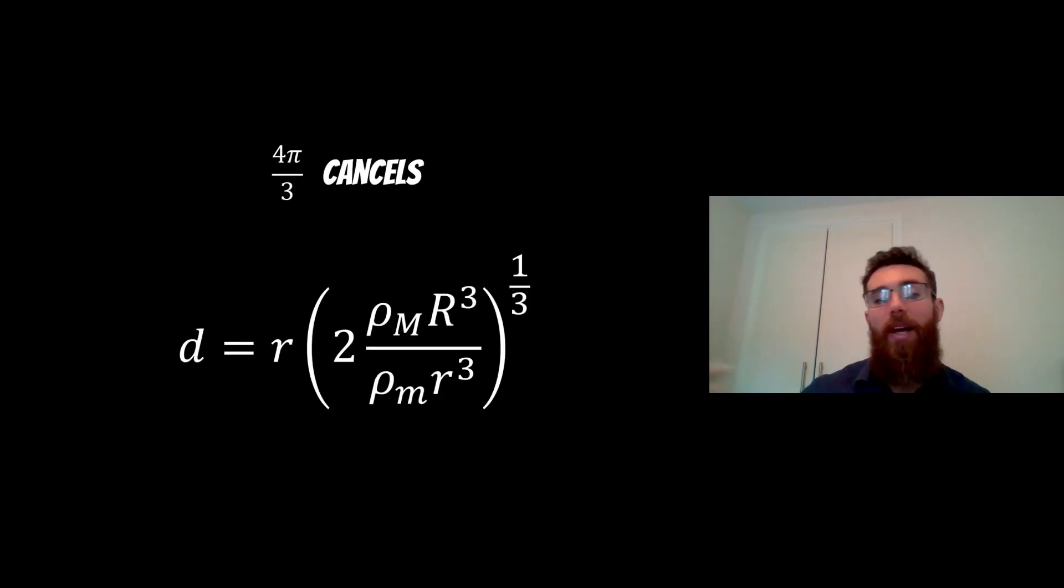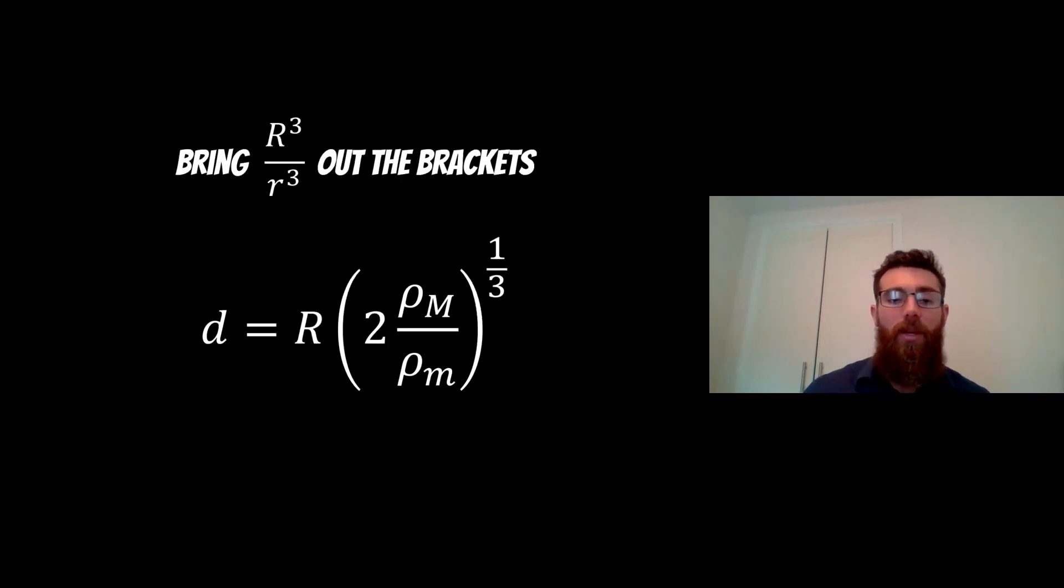We can go back to our expression we had before. Now the 4π/3 cancels out straight away because it's top and bottom, and we're just left with the density times the radius cubed of both the planet and the satellite. Now we can bring both the radiuses cubed over one another outside of the brackets, and what that will do is it removes the radius of the satellite and we're just left with the radius of the planet instead.